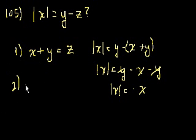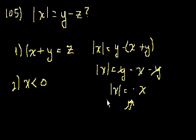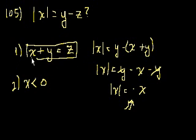Statement 2 tells us x is less than 0, so x is definitely negative. If we put that together with statement 1's result — that |x| = −x — this is true for any negative number, since the absolute value of a negative number is the opposite of that number. Statement 2 alone is useless without statement 1. So both statements together are sufficient, but individually they are not. The answer is C.